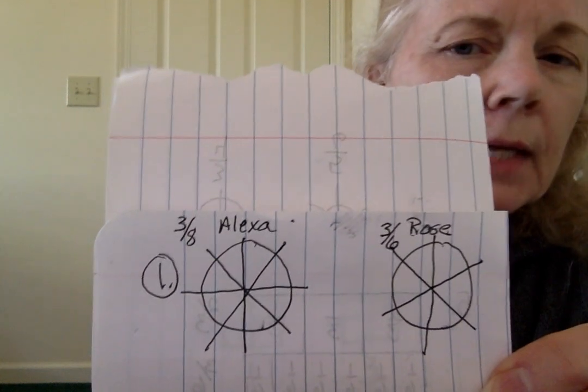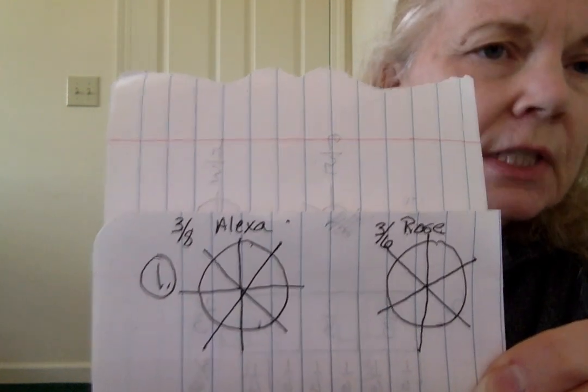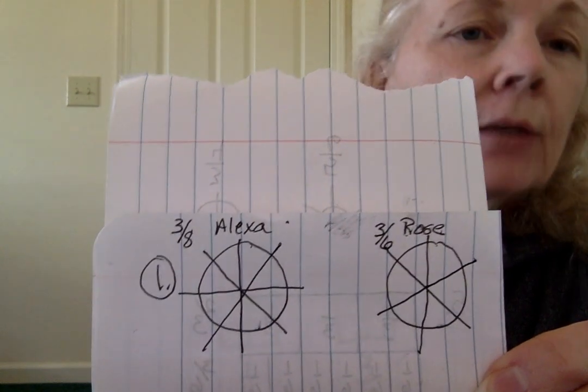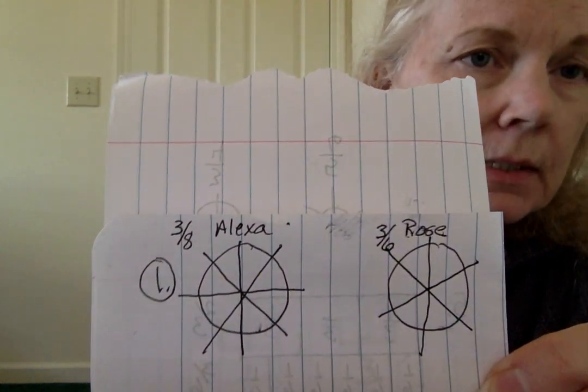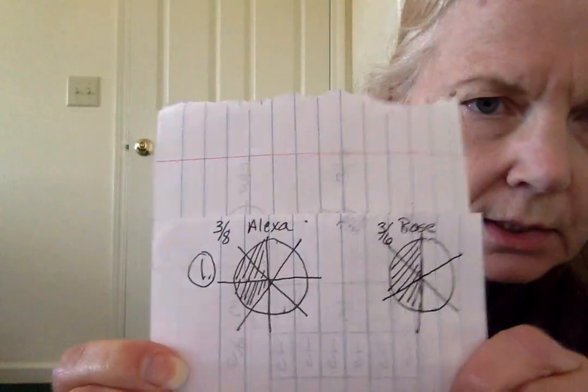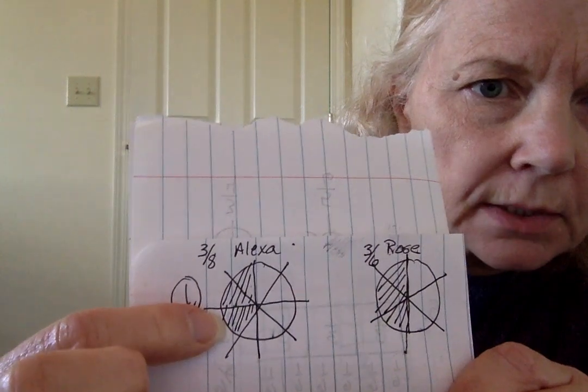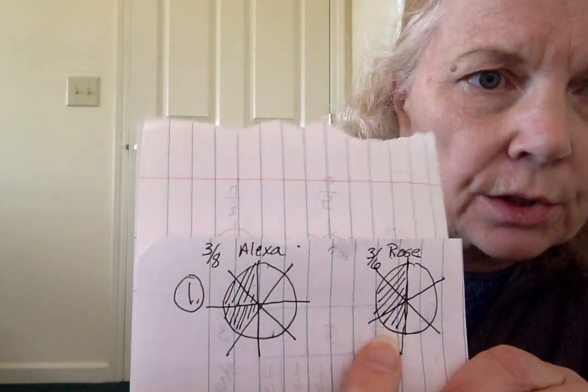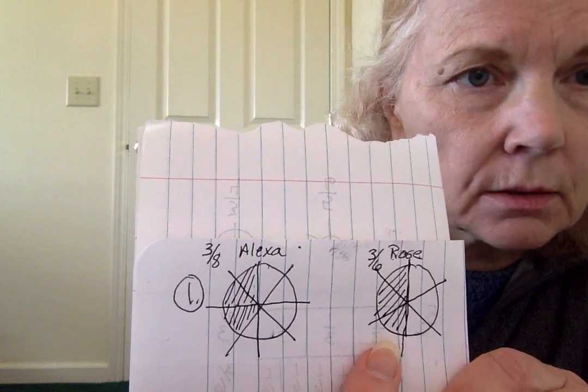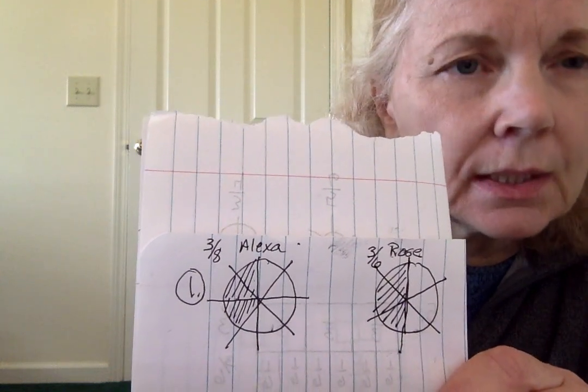So now the next thing I would do is shade in three of Alexa's pieces and three of Rose's pieces. I shaded in three out of eight pieces here, and I shaded in three out of six pieces. Fewer pieces, but each piece is bigger.